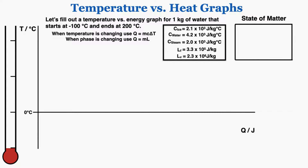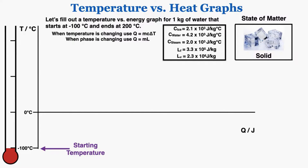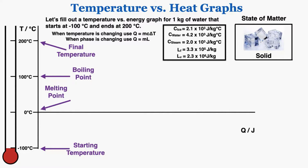I have the two heat equations we use for these calculations. When temperature is changing we use Q = mcΔT, and when phase is changing we use Q = mL. I'll start by labeling important temperatures on the y-axis: the water starts at negative 100 degrees Celsius as a solid, 0 degrees Celsius is the melting point, 100 degrees Celsius is the boiling point, and the final temperature is 200 degrees Celsius. I space those out evenly to represent equal increments across the full range of the graph.